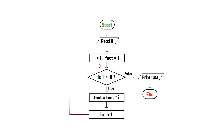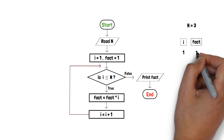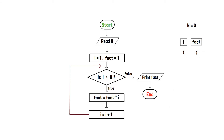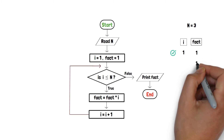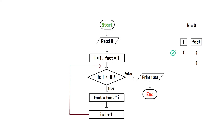Now, let's dry run the program to understand it in a better way. Consider n is equal to 3. At first, the variable i will be 1, and the variable fact will also be 1. Now as i is less than or equal to 3, the condition in the decision box is true. And hence, the fact remains 1 as 1 multiplied by 1 is 1. Additionally, i is incremented to 2.